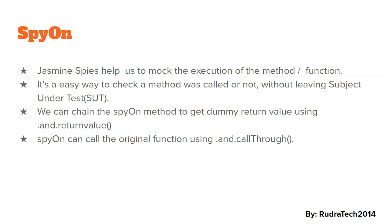Using SpyOn functionality, we can change the methods to get dummy return values using .and.returnValue, or the SpyOn functionality can also help us to call the original method. It provides us not only the ability to spy on a certain functionality or method, but it also helps us to get dummy values or even call the original function. SpyOn is very useful for testing sub-functionality within the main functionality without leaving the original unit test case.